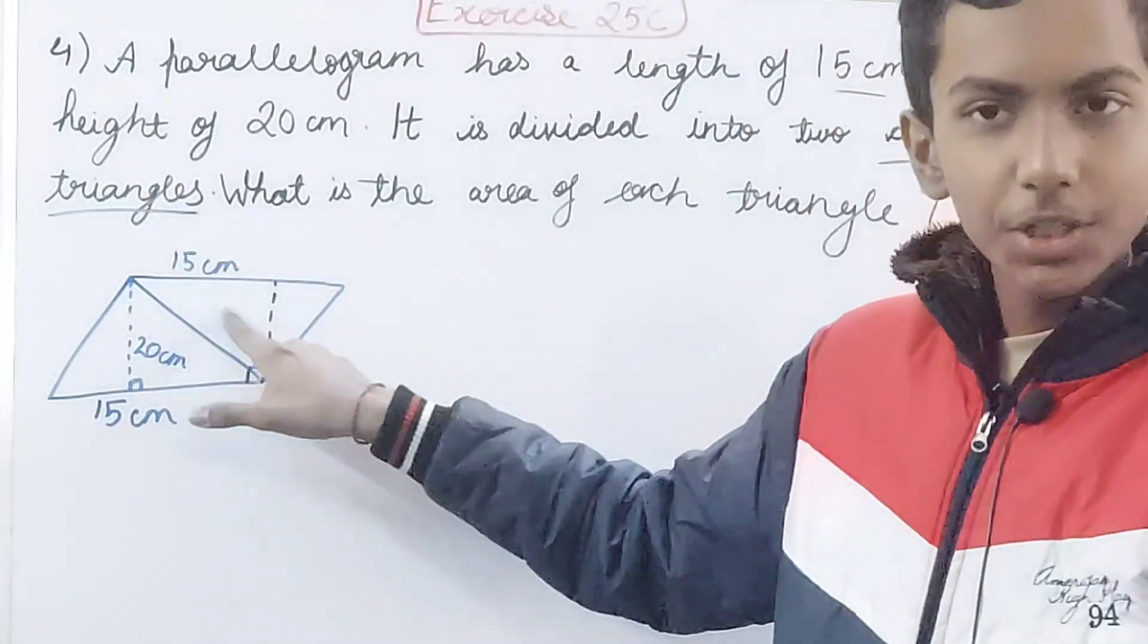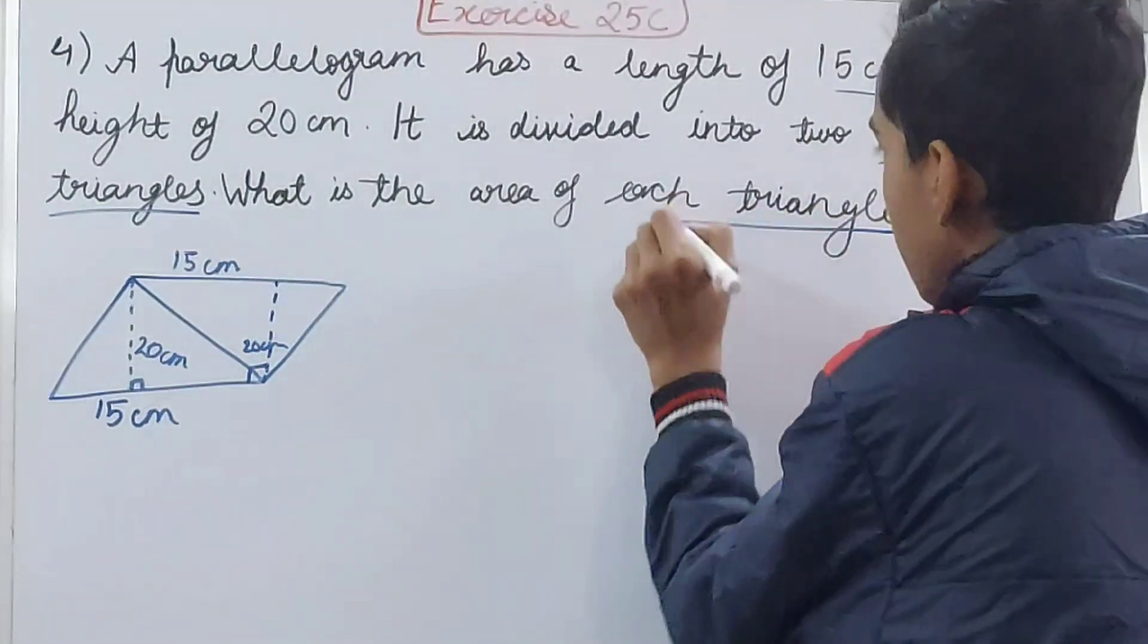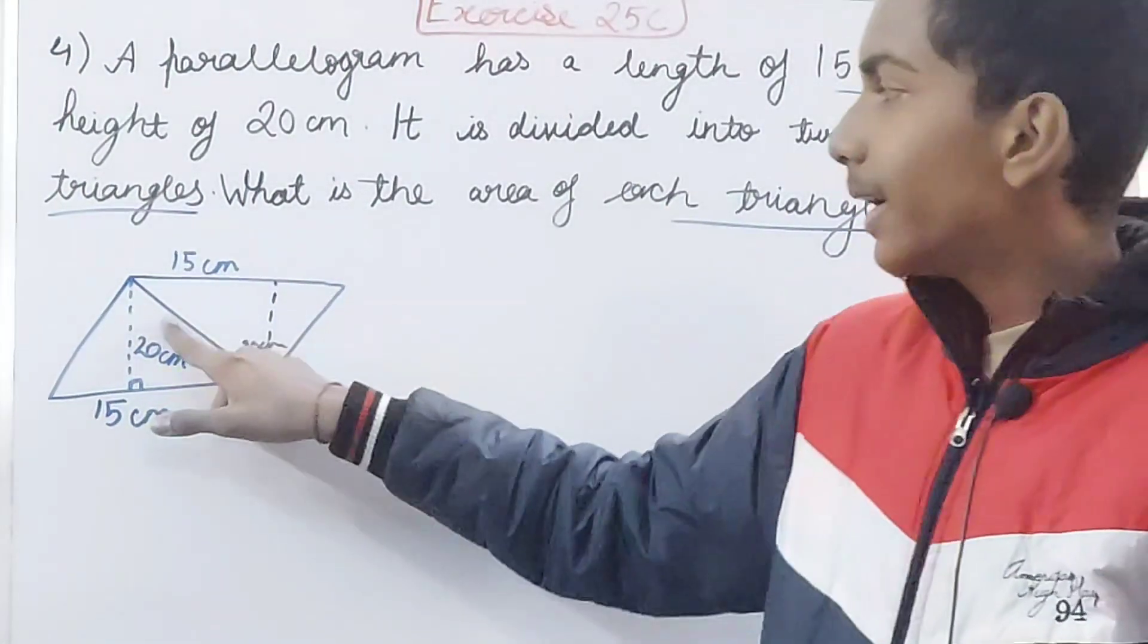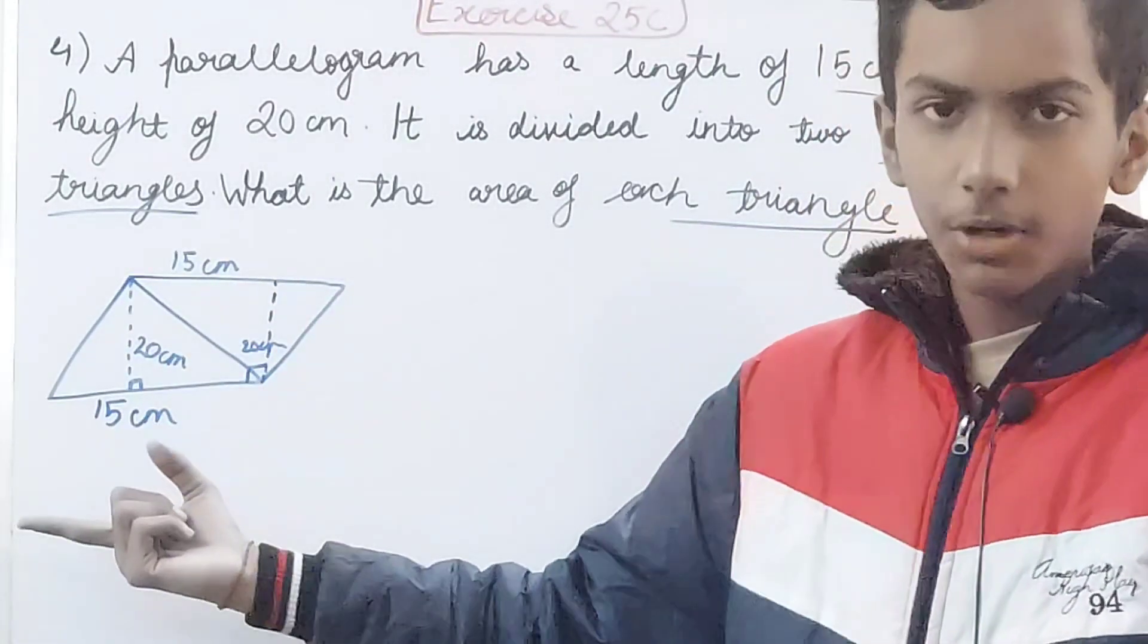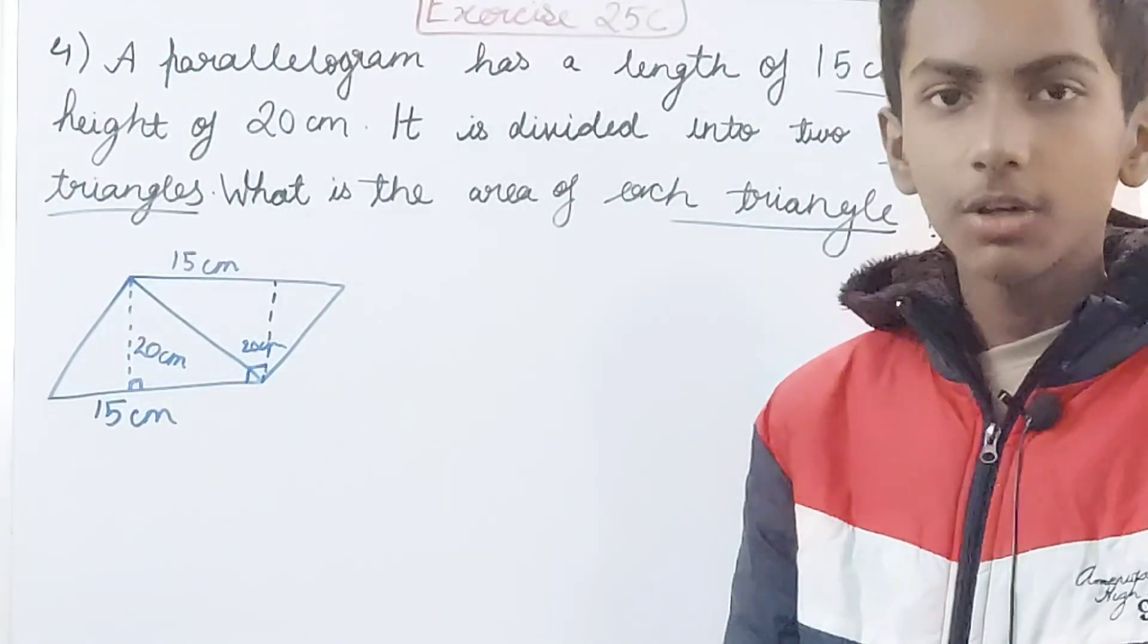And if all the dimensions are identical then the area will also be the same. That means the area of this triangle will be the same as this triangle. So what it is asking is what is the area of each triangle. Now if I can find the area of any of the two triangles then I will get the area of each triangle because that will be the area of the other one as well.